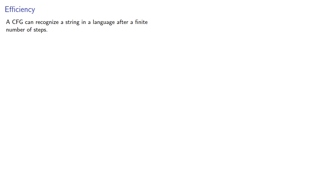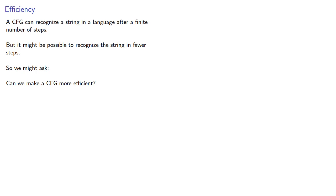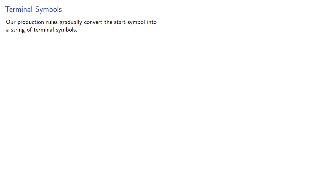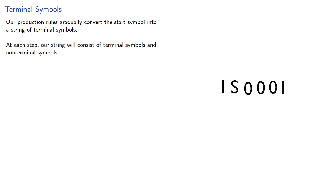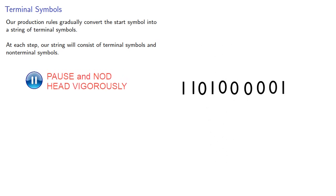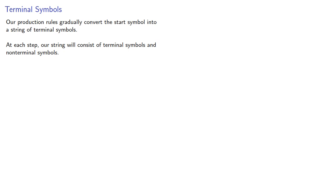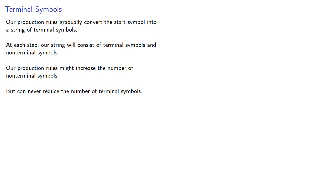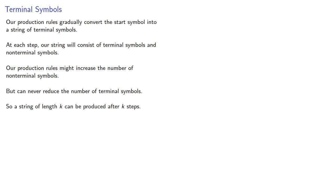A context-free grammar can recognize a string in a language after a finite number of steps, but it might be possible to recognize a string in fewer steps. So we might ask: can we make a context-free grammar more efficient? Our production rules gradually convert the start symbol into a string of terminal symbols. At each step, our string will consist of terminal symbols and non-terminal symbols. Our production rules might increase the number of non-terminal symbols, but can never reduce the number of terminal symbols. And so it seems that a string of length k can be produced after k steps — or can it?